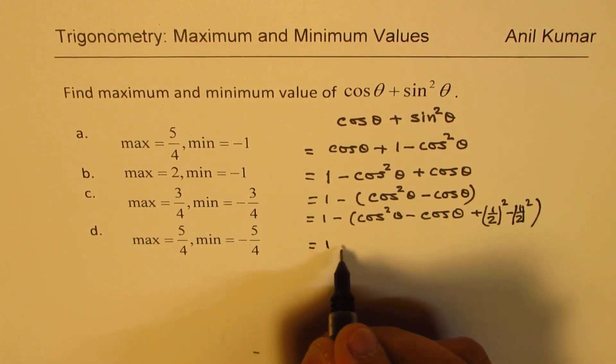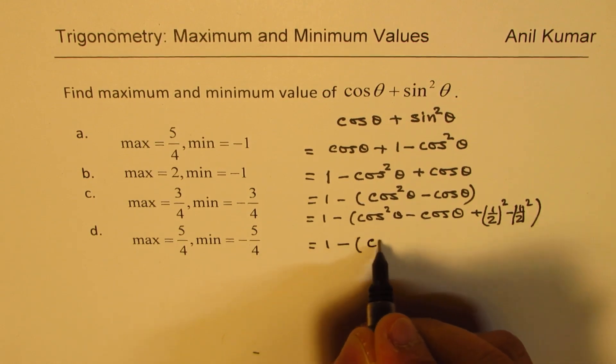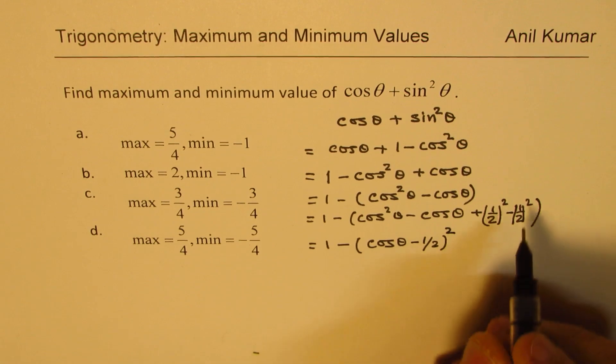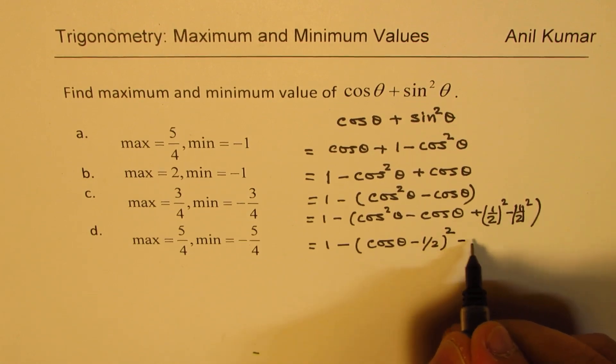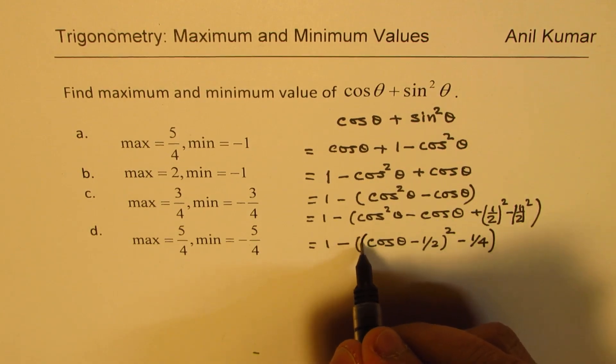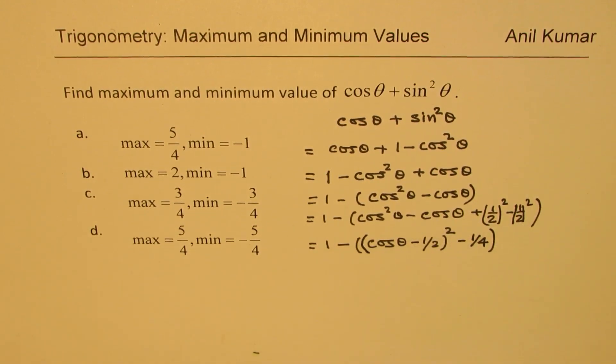So that will help us to get a perfect square. Now we can write this as (cos θ - 1/2)². So this is your perfect square.